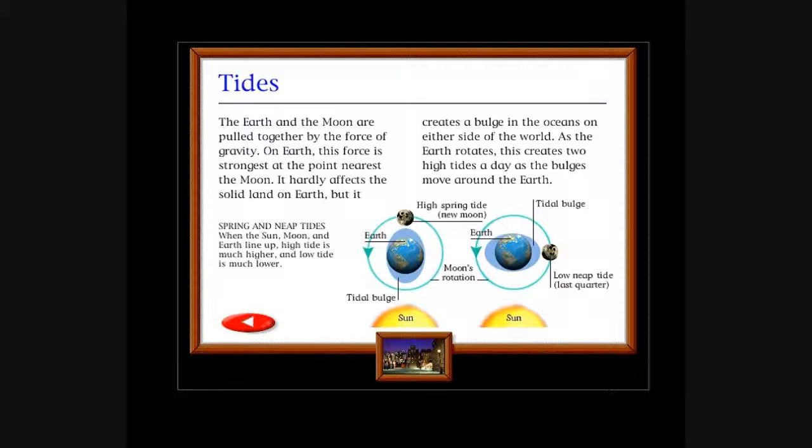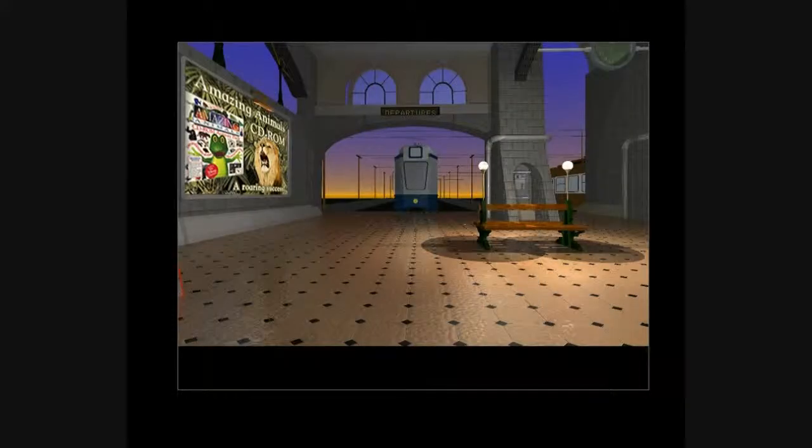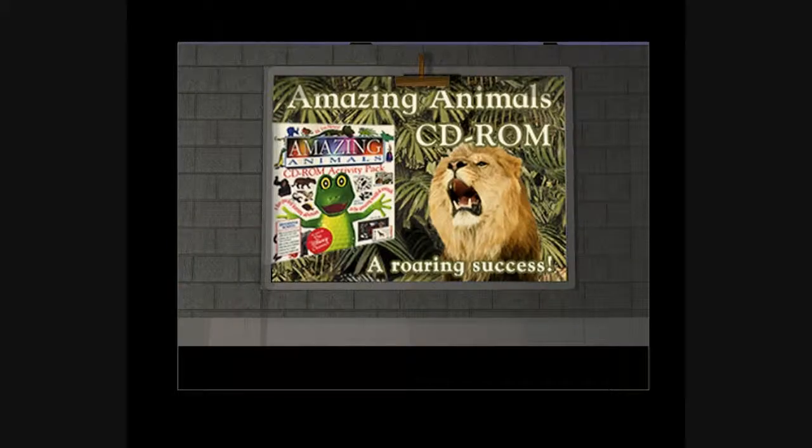Tides: The earth and the moon are pulled together by the force of gravity. On earth, this force is strongest at the point nearest the moon. It hardly affects the solid land on earth, but it creates a bulge in the oceans on either side of the world. As the earth rotates, this creates two high tides a day as the bulges move around the earth. Spring and neap tides: When the sun, moon, and earth line up, high tide is much higher and low tide is much lower. Earth, tidal bulge. There's the sun, there's the moon. High spring tide, new moon, moon's rotation, tidal bulge, earth, low neap tide, last quarter, and sun. So the oval-shaped thing surrounding the earth there follows the moon about. So the moon is like a magnet, the earth is like a magnet. They're all pushing against each other, pulling each other, and there they go, they move about in circles. Amazing.